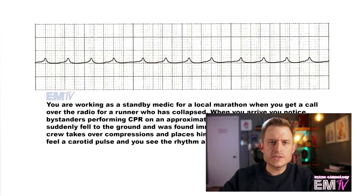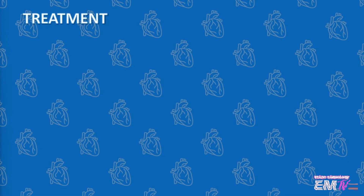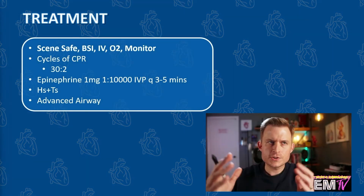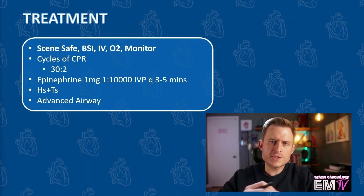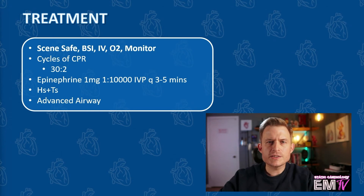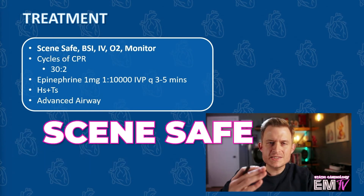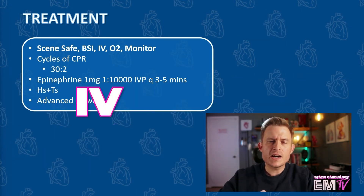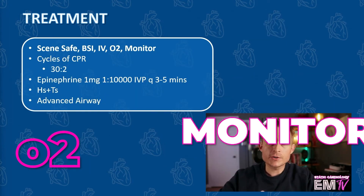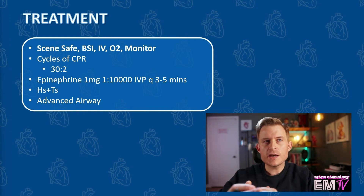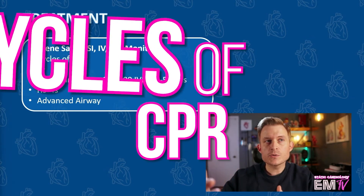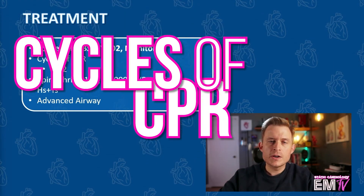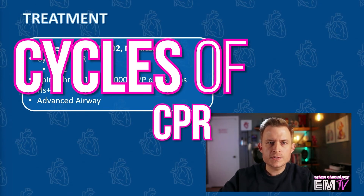Now let's go ahead and take a look at the treatment. Just like with all my other static cardiology cards, I'll begin treatment by regurgitating the mantra: scene safe, BSI, IVO2, monitor. Because this is a PEA arrest algorithm, I'll then go ahead and perform cycles of CPR with 30 compressions and two breaths.